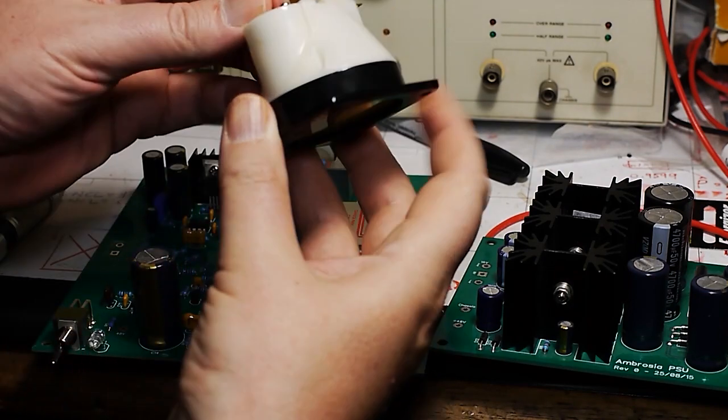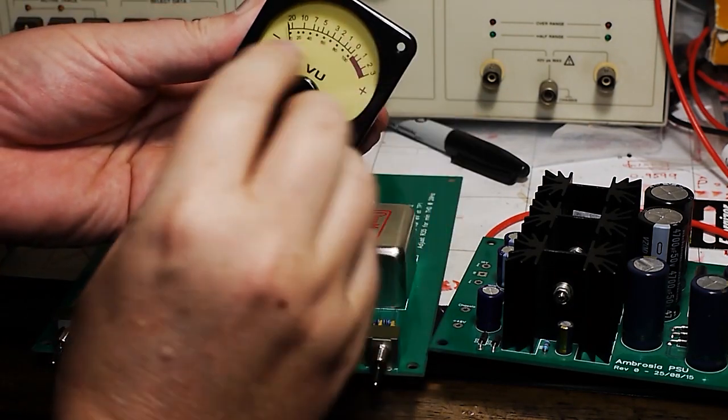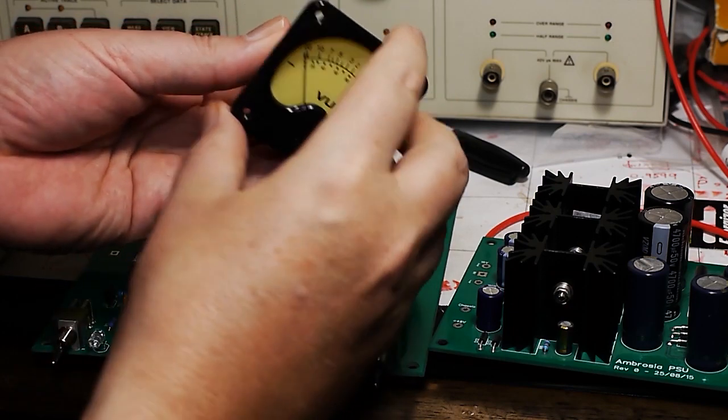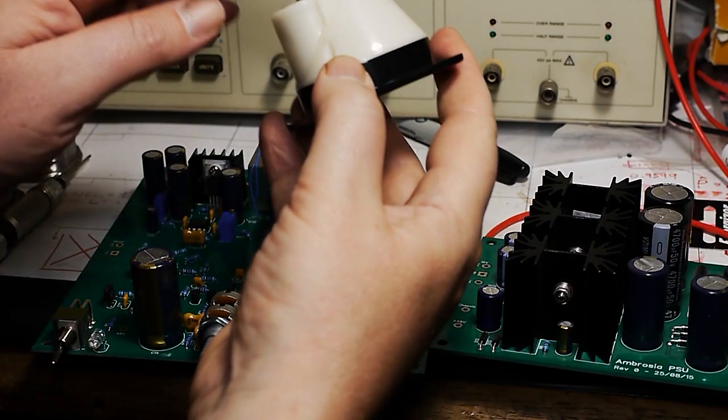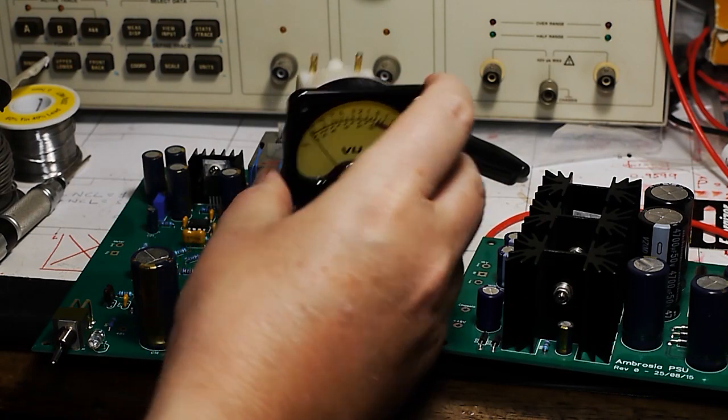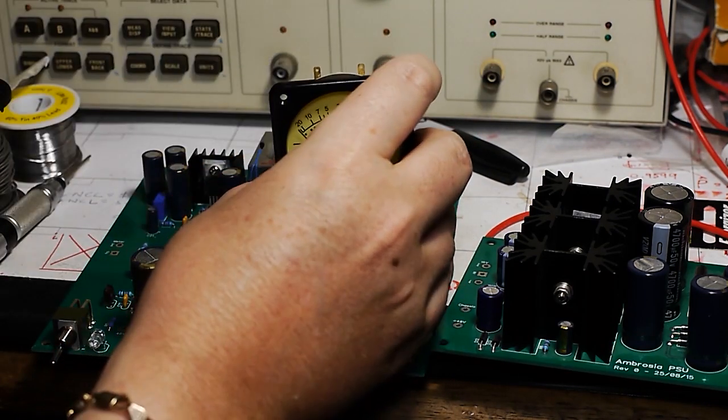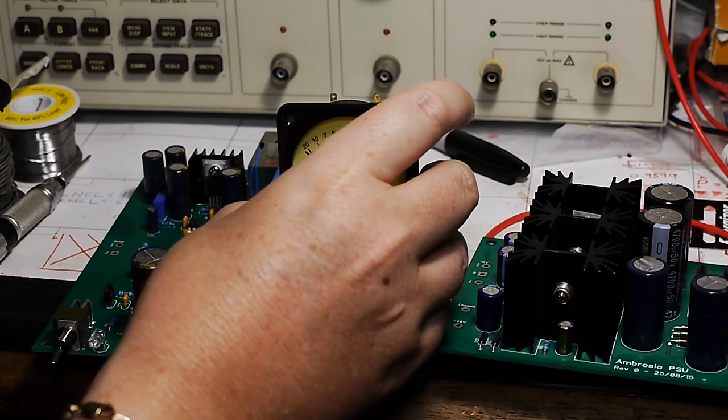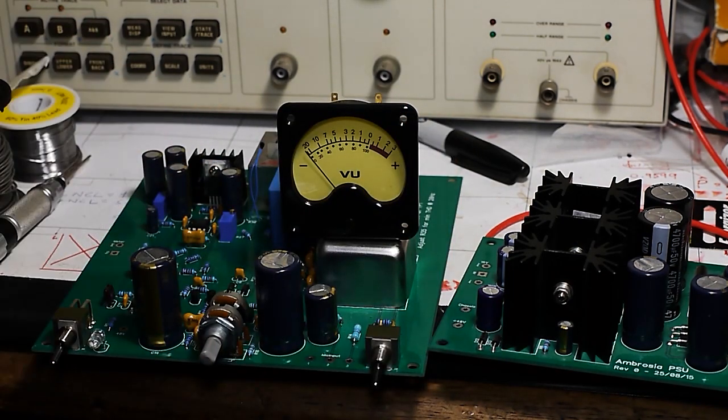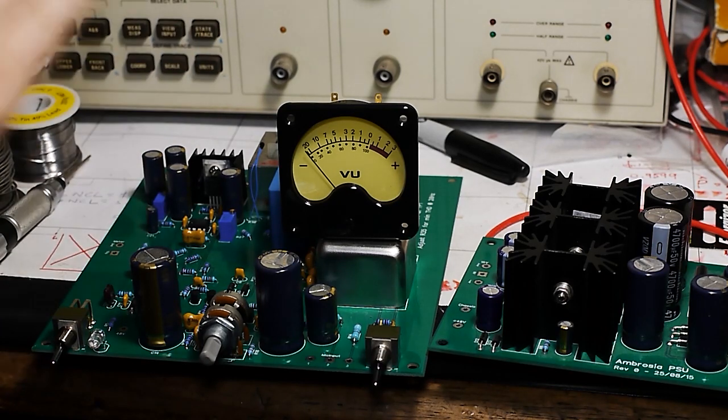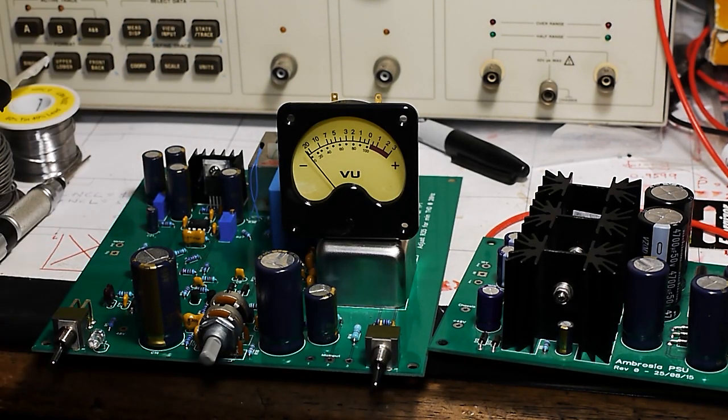Basically, this damping is because the movement of the needle creates a back EMF, and you can use that to damp its motion. So I figured if I could just drive it with an amplifier with an appropriate output impedance, then we should be able to get the kind of dynamic behavior that we're looking for.